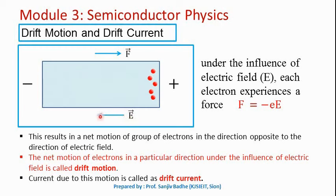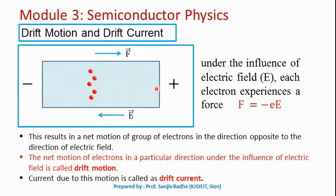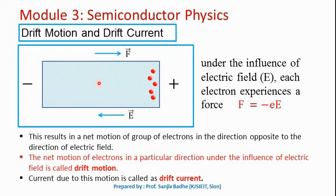Here the electric field is acting in this direction and the force on the electrons will act in the opposite direction because force F is equal to minus e times E. This will result in net motion of a group of electrons in the direction opposite to the direction of the electric field. Electrons will start moving in that opposite direction in addition to the random motion, but the net motion of the group will be opposite to the field.